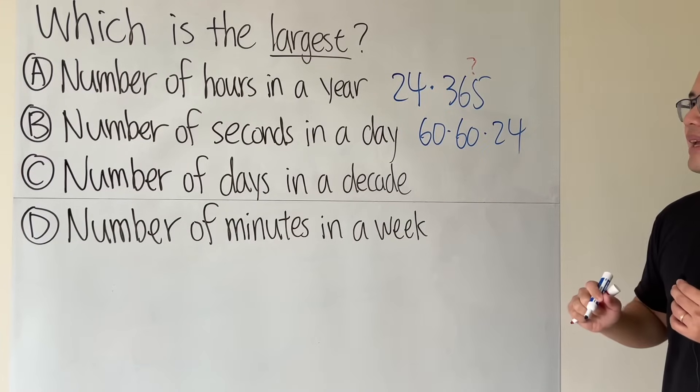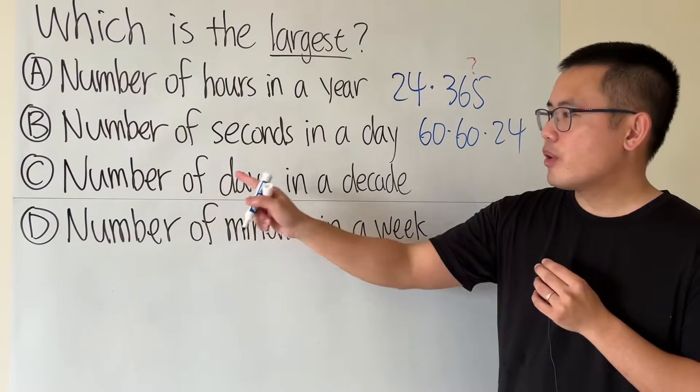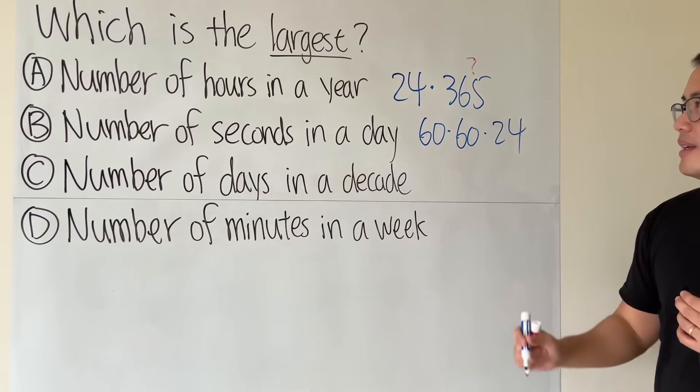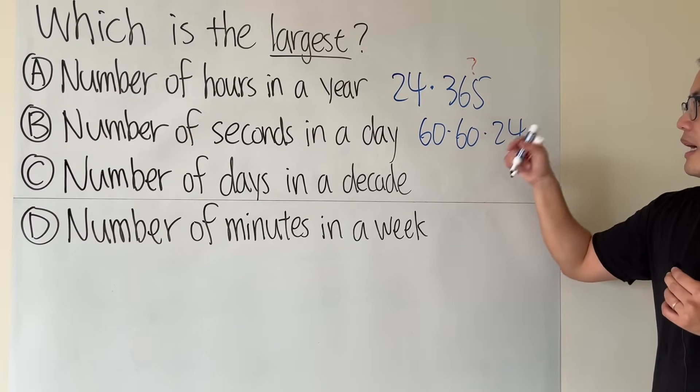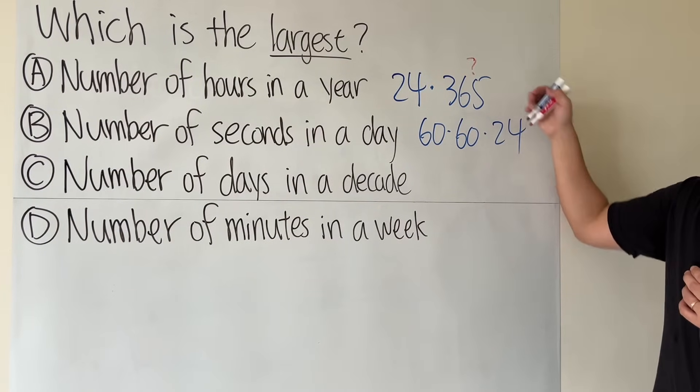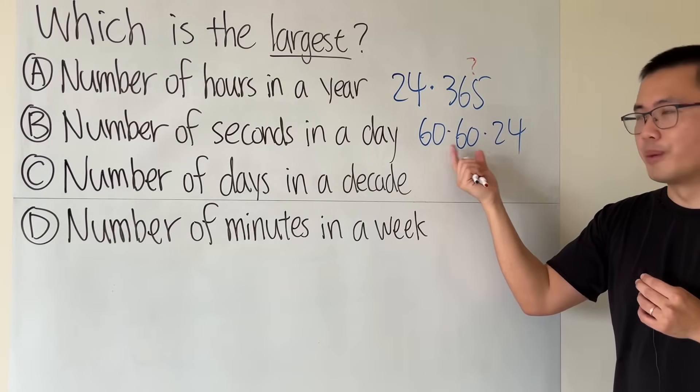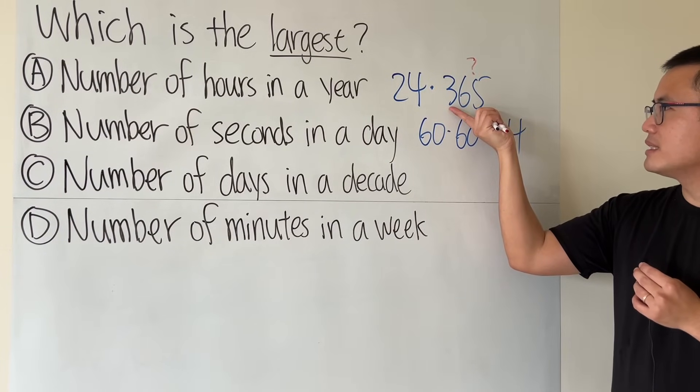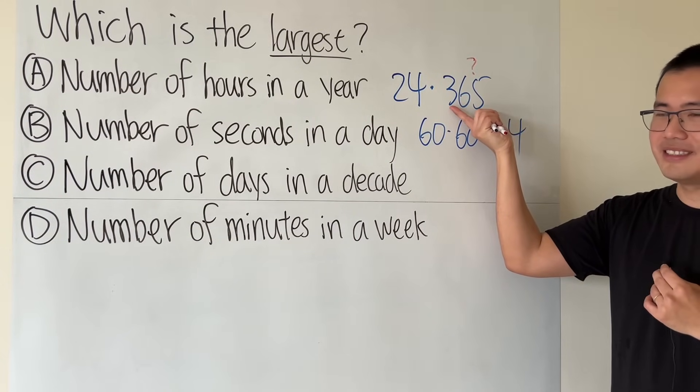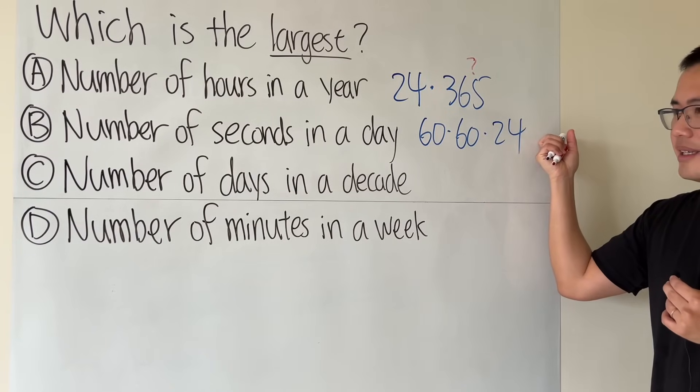Then number of days in a decade. Oh by the way, this is definitely bigger than that because 24 and 24 are the same, 60 times 60 is for sure bigger than either 365 or 366 right? So right now B is winning.